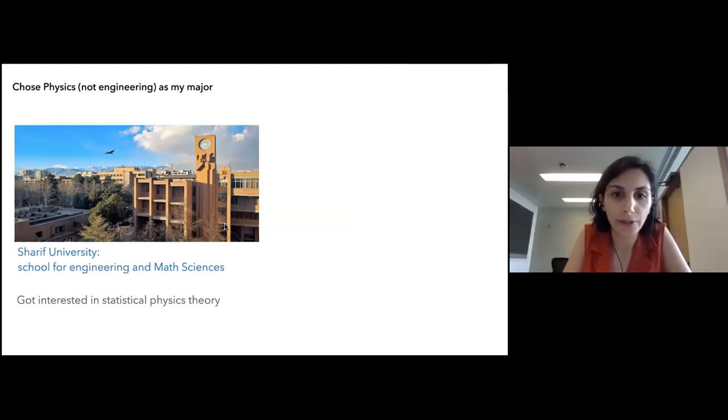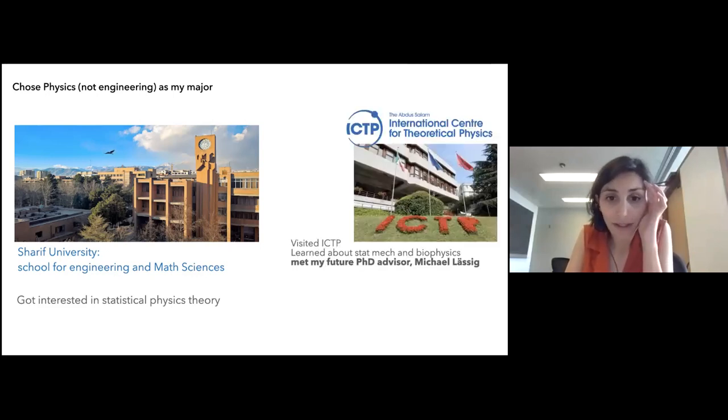I went to the Sharif University which is a school of engineering and math in Tehran and chose physics as my major. At the time a lot of people were surprised because if you get a good grade you would choose electrical engineering—that was the fashion of the time. It was not very popular to do basic sciences but I think I made the right decision. I got in the physics department, there were very interesting professors there so I got into statistical physics.